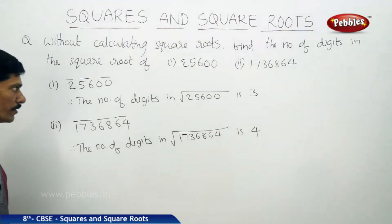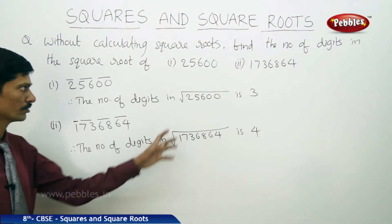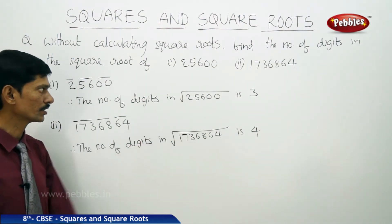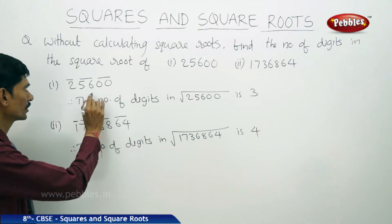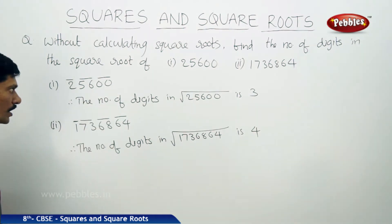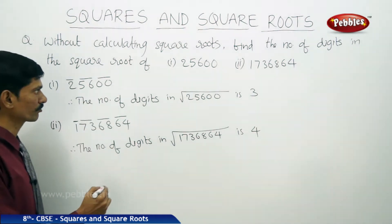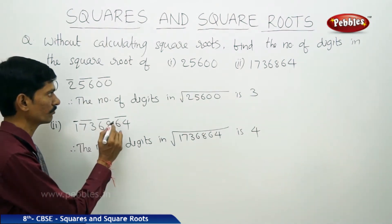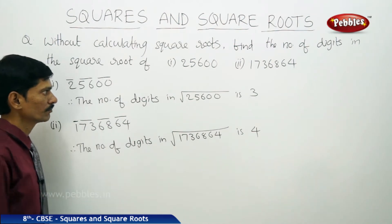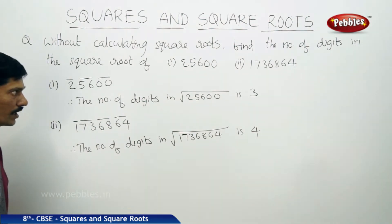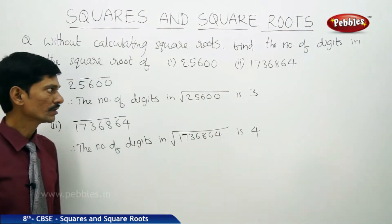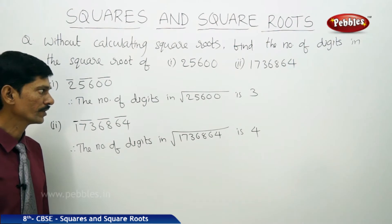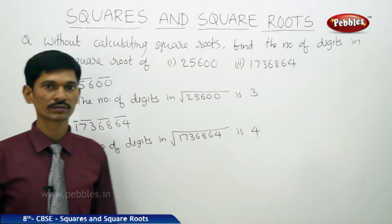So the number of digits in the square root equals the number of bars over the given number. We cannot find the square root of the given number directly this way, but we can find the number of digits in the square root.